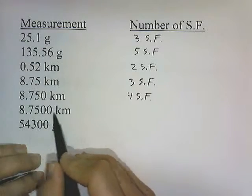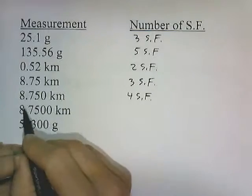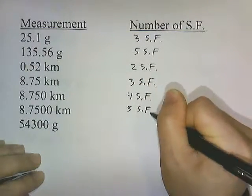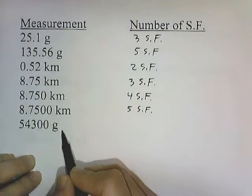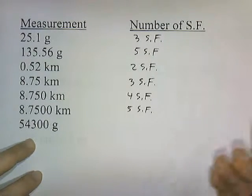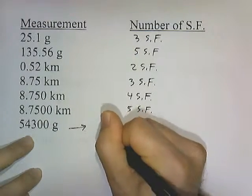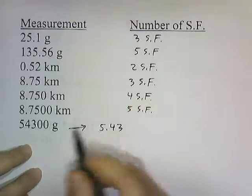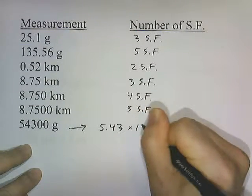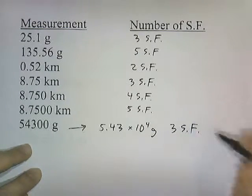8.7500 — these zeros are behind numbers and behind the decimal, so that's 5 significant figures. 54,300 grams — these zeros are behind numbers but they're not behind a decimal, so they don't count. That's only 3 significant digits. In scientific notation, we write it as 5.43 times 10 to the 4th grams, and we have 3 significant figures there.